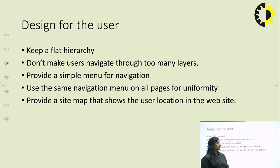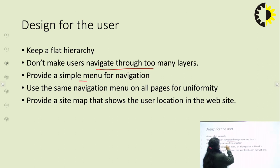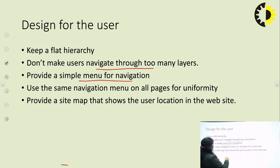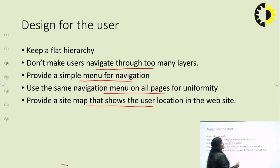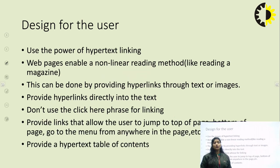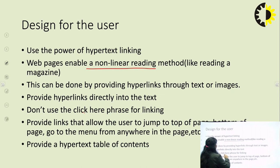We have to keep a flat hierarchy and not make users navigate through too many layers. Information must be visible within one or two pages. A simple menu for navigation must be provided, and navigation is generally provided on the left-hand side. We can use the same navigation windows on all pages for uniformity, keeping the left banner intact as well. Provide a sitemap that allows a user to know their location in the website, and use the power of hypertexting or hyperlinking — more irrelevant information goes in hyperlinks, more relevant information in headlines.